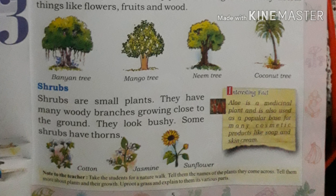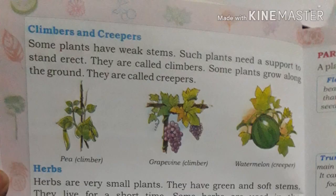Another type of plants are climbers and creepers. These are plants which have weak stems — the stems of these plants are very weak and they need support to stand erect. Just like cucumber, watermelon, and pumpkin plants — they need support to stand. We put a bamboo for them to climb through, and then they stand and produce flowers and vegetables for us. These are called climbers or creepers.